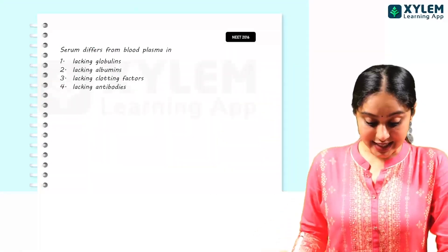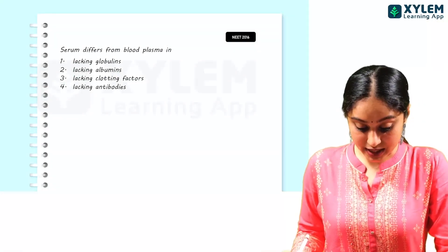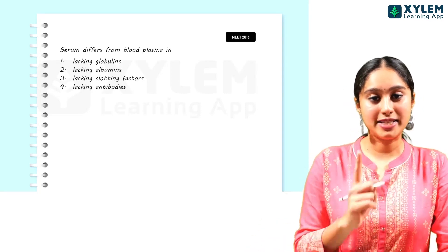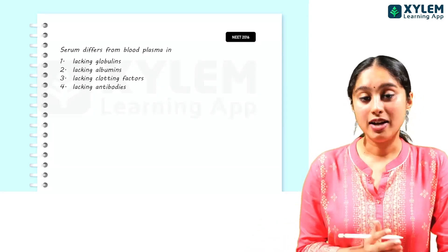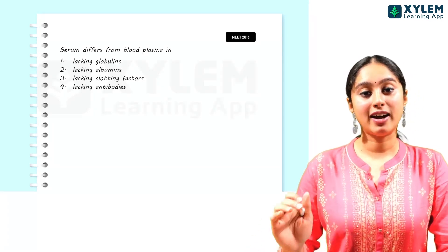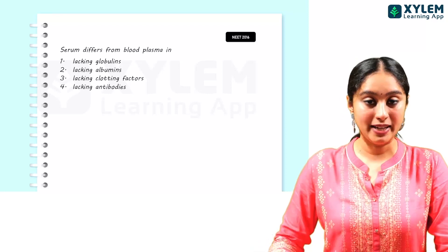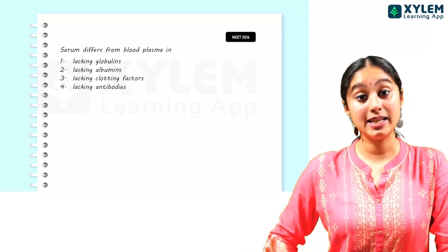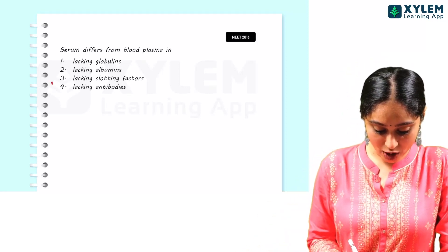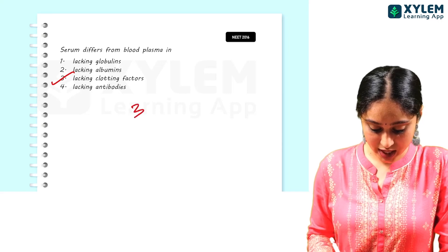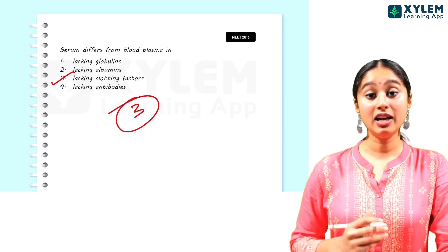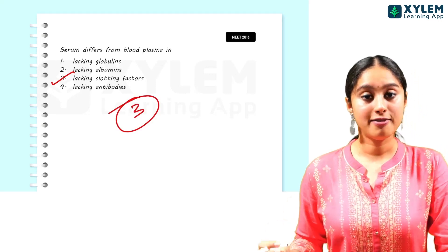The next question: serum differs from blood plasma in that serum is plasma without clotting factors. Clearly, the answer here is option 3 — lacking clotting factors.